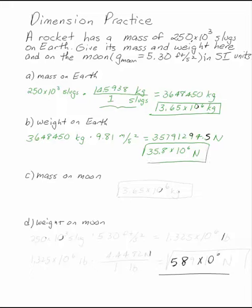The mass on the moon is, of course, the same as the mass on the Earth. So we can write this one down. This is 3.65 times 10 to the sixth kilograms.